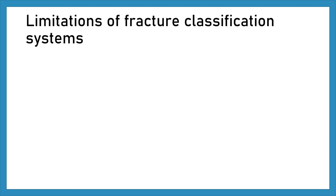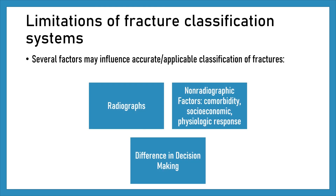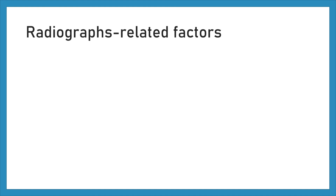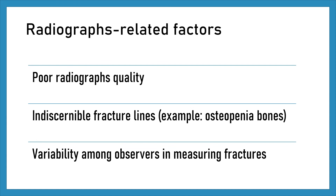Limitations of fracture classification systems: several factors may influence accurate or applicable classification of fractures, including radiographs, non-radiographic factors such as comorbidity, socioeconomic status, physiologic response, and decision making. Radiograph-related factors include poor radiograph quality, indiscernible fracture lines (for example in osteopenic bones), and variability among observers in measuring fractures.